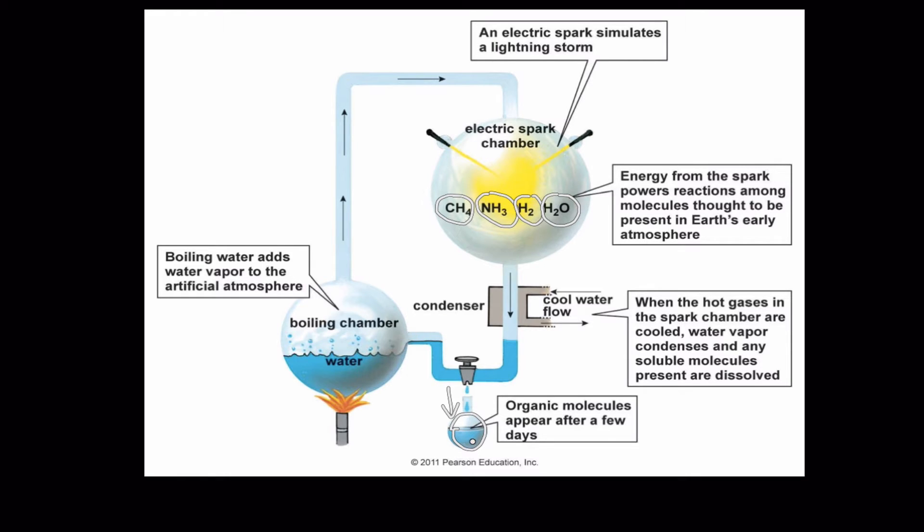...and then take a sample down here and you check this precipitate, this material that's coming out down here, you're going to find organic molecules. When Miller did this experiment in 1953 he found simple amino acids and simple sugars down here in this collection jar. So he showed that you can build organic molecules abiotically or outside of living cells.